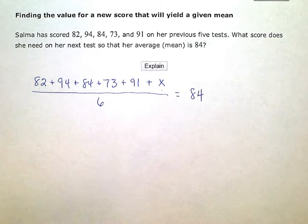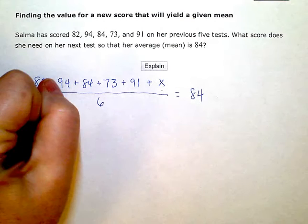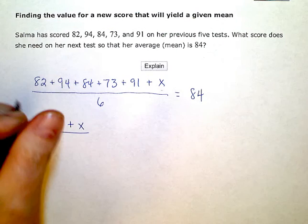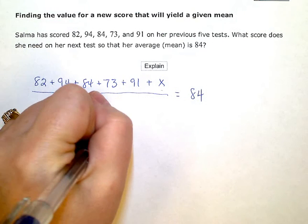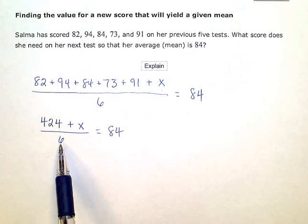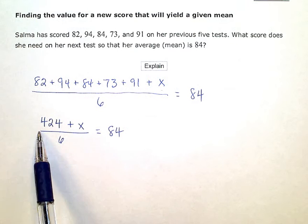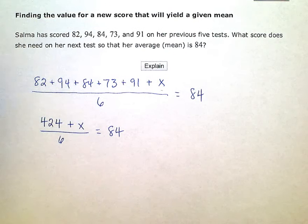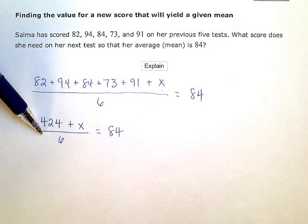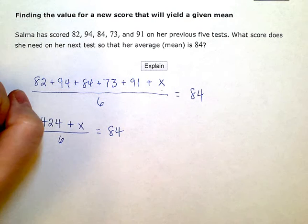So the first five tests gave her a total of 424 points plus she's going to take this one more test. And then if we divide it by six, we want the average to be 84. So now I just keep solving this equation. The very first thing I have to do is kind of get rid of this big fraction bar here. It's acting as a grouping symbol and it's keeping these terms in the top kind of linked together until I get rid of it. So to get rid of this divide by six, I'm going to do the inverse of multiplying by six.